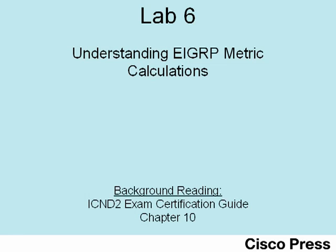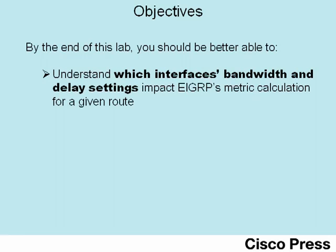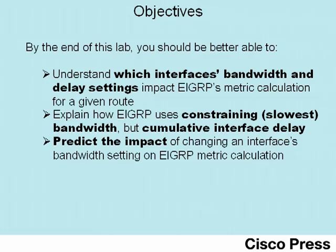For those of you following along with the Cisco Press books, note that the material covered in this video is also covered in the ICND2 book's Chapter 10. This lab has three main objectives: first, to understand which interface's bandwidth and delay settings impact EIGRP's metric calculation for a particular route; then to explain how EIGRP uses the slowest or constraining bandwidth as well as the cumulative interface delay to calculate its metric; and finally to predict the impact of both bandwidth and delay settings on EIGRP's choice for the best route.